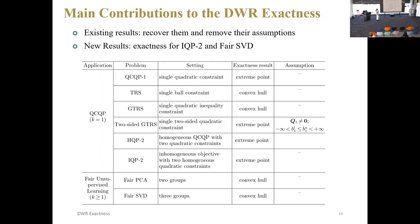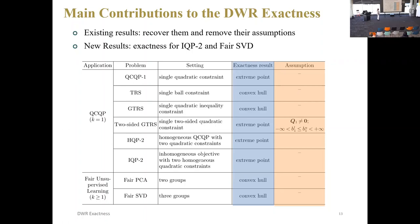Using our proposed exactness conditions, we can generalize and extend some exactness results for various applications. This table displays problems we can cover using our exactness conditions. The results show they satisfy DWR extreme point exactness or convex hull exactness. Our exactness results are free of assumptions — in the literature, they often need the Slater condition, but we don't. We first derived some new exactness results for two problems: IQPT2, an inhomogeneous QCQP with two homogeneous quadratic constraints, and fair SVD, which is built on the non-symmetric matrix space, unlike QCQP which only focuses on the positive semi-definite matrix space.